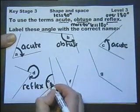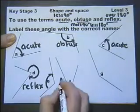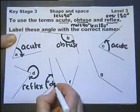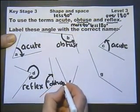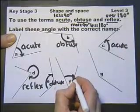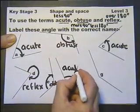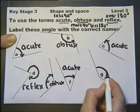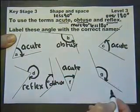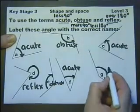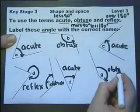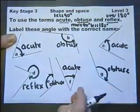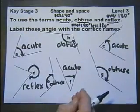This one, is more than 90, but it hasn't got over 180, so that's obtuse. This one, less than 90, that's acute. And this one, more than 90, less than 180, obtuse. So we need to know those three words about angles.